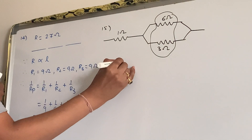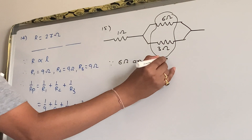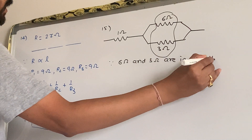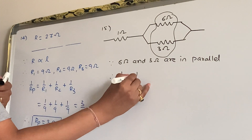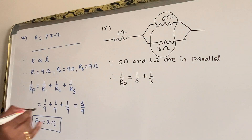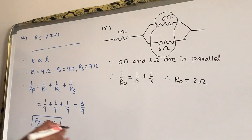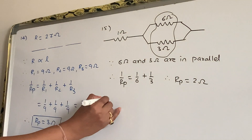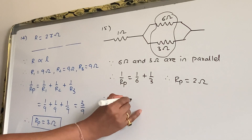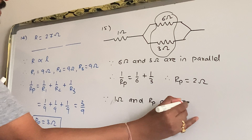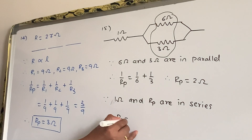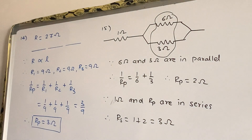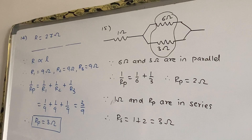Since 6 ohm and 3 ohm are in parallel, we write: 1/Rp = 1/6 + 1/3. So Rp = 2 ohm. Now since the 1 ohm and Rp are in series, the total resistance Rs = 1 + 2 = 3 ohm. That is the answer to question 15.